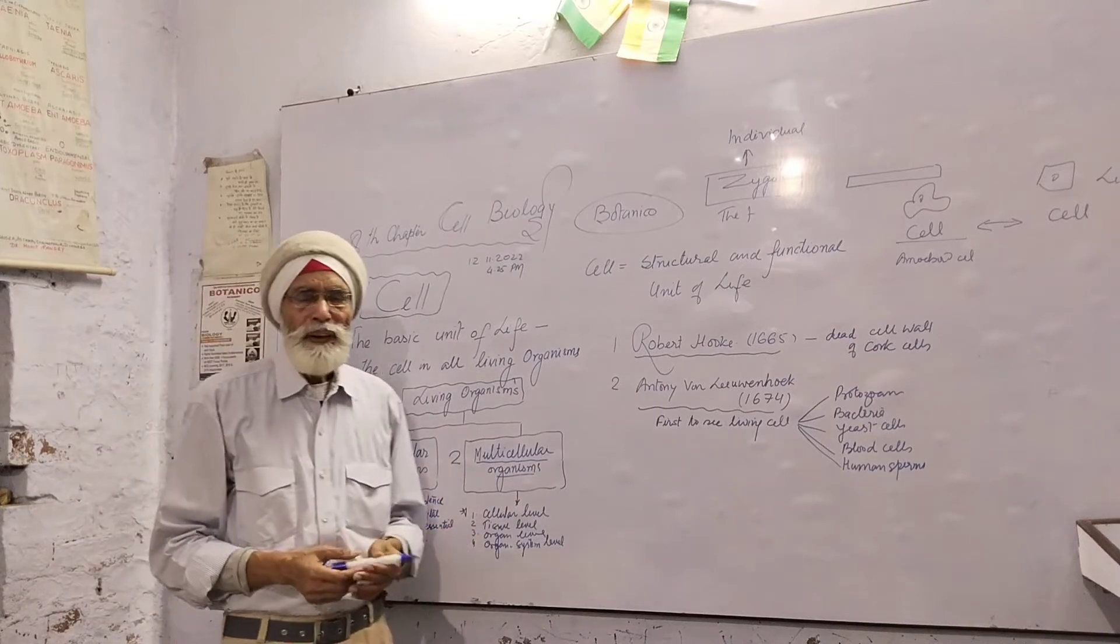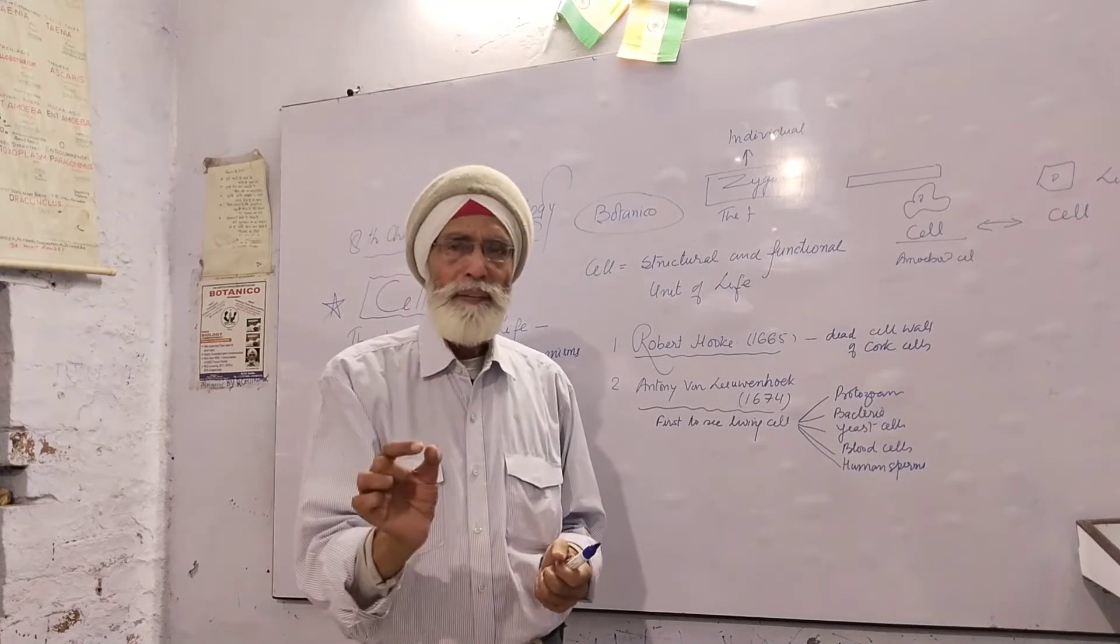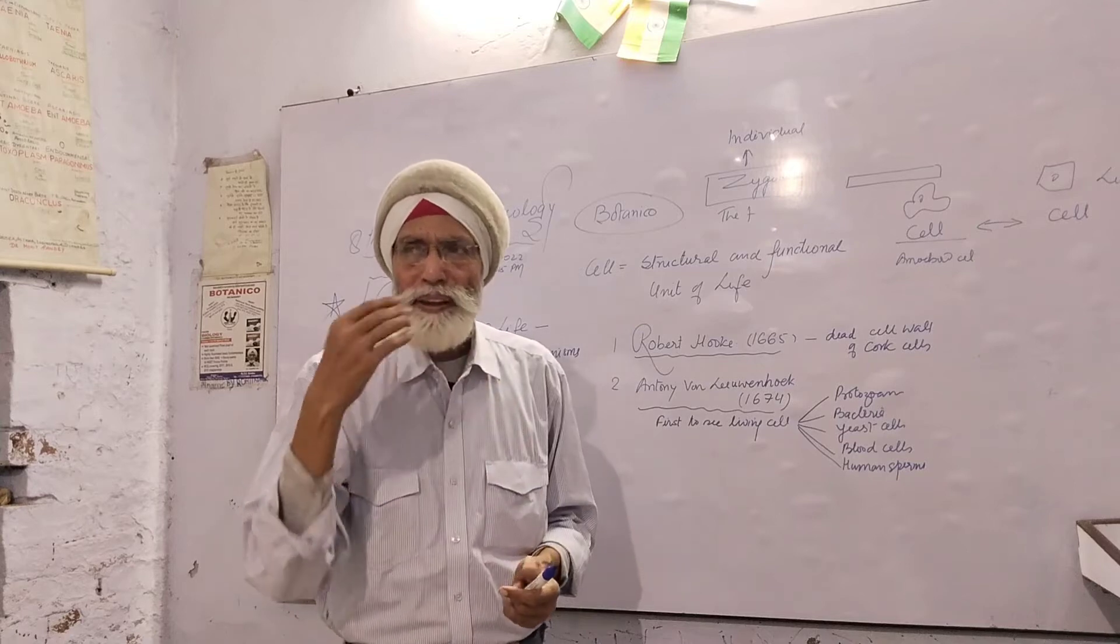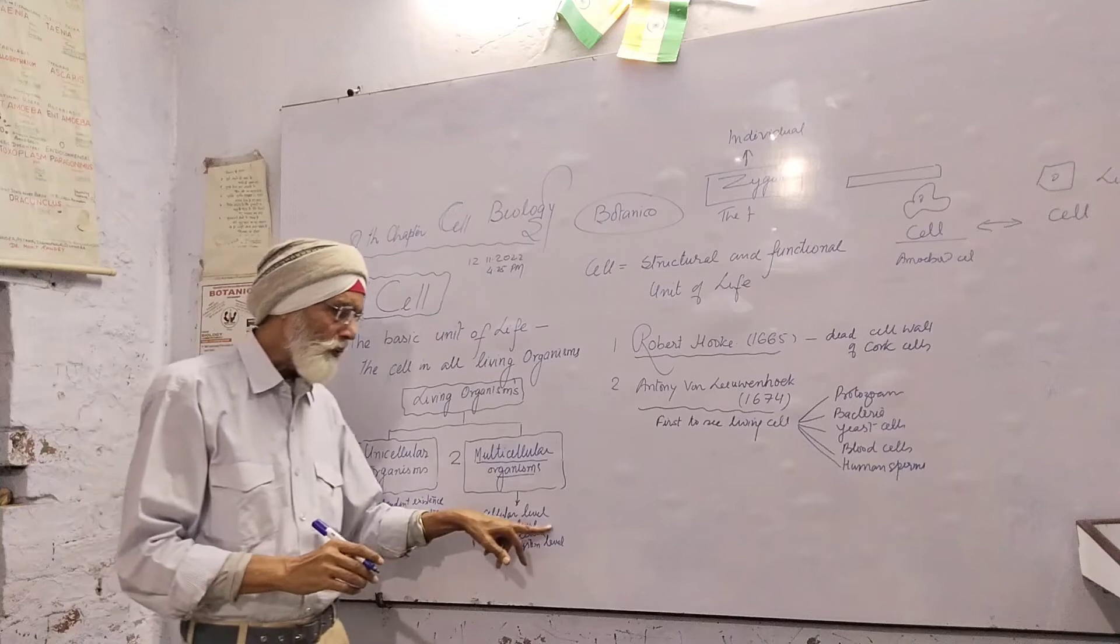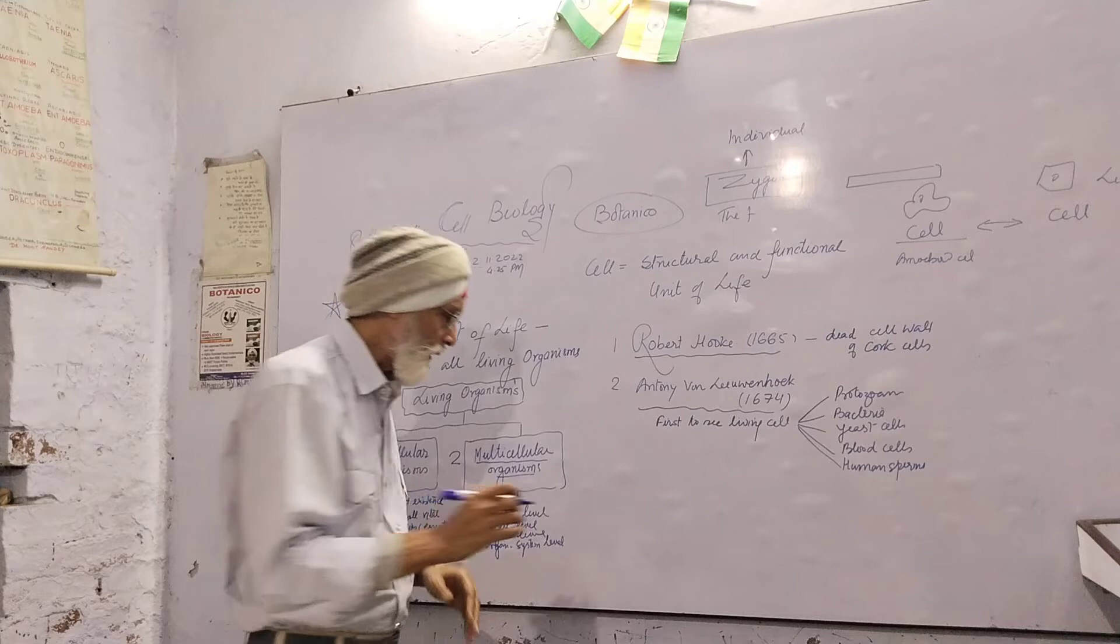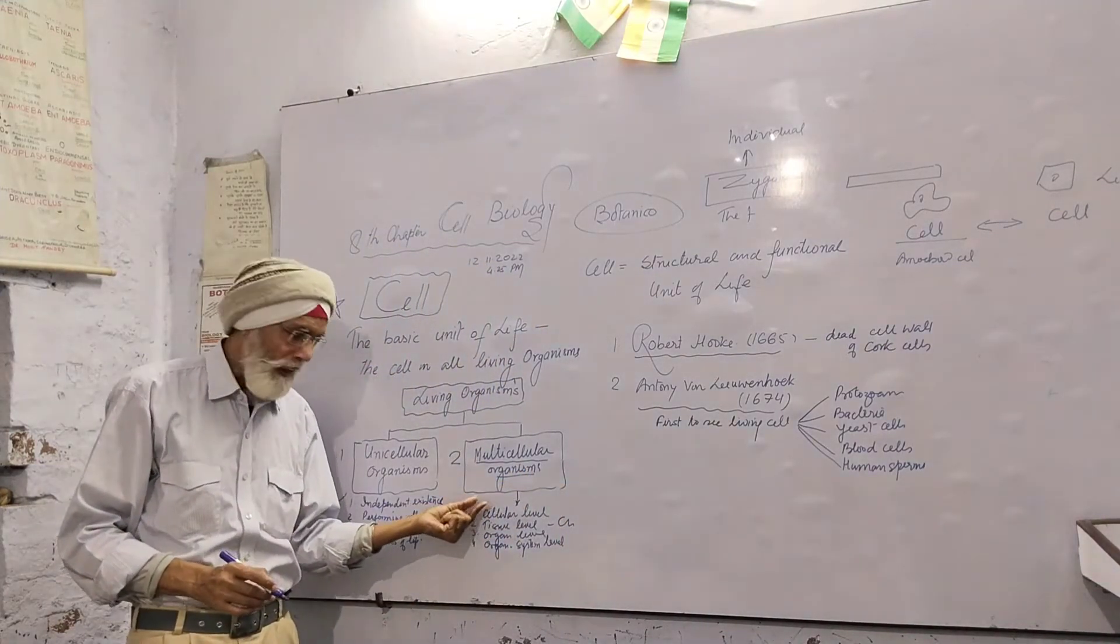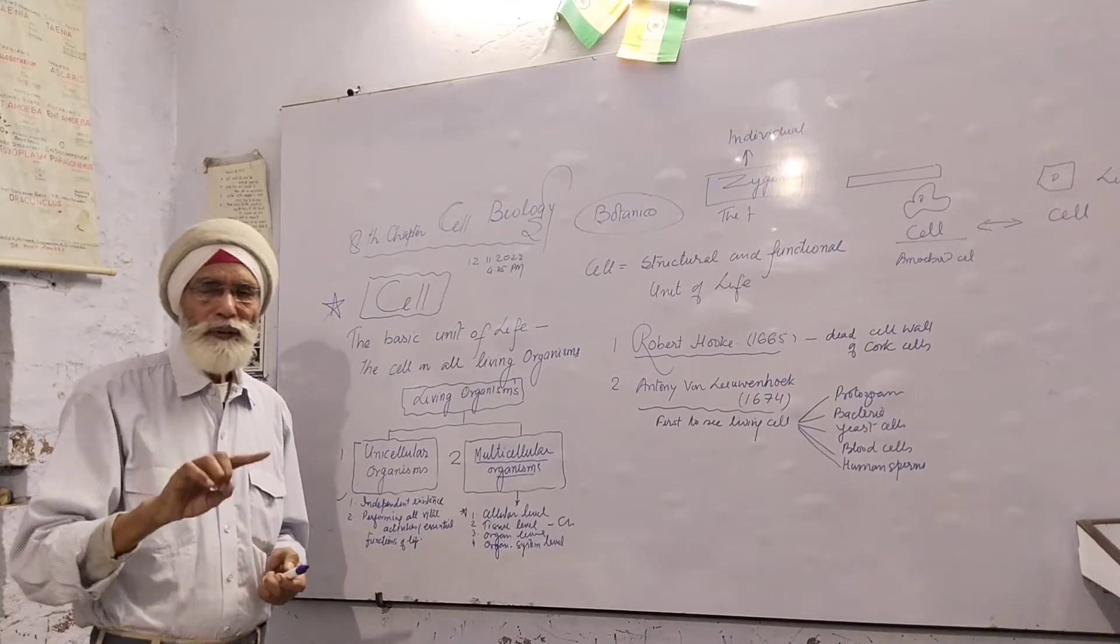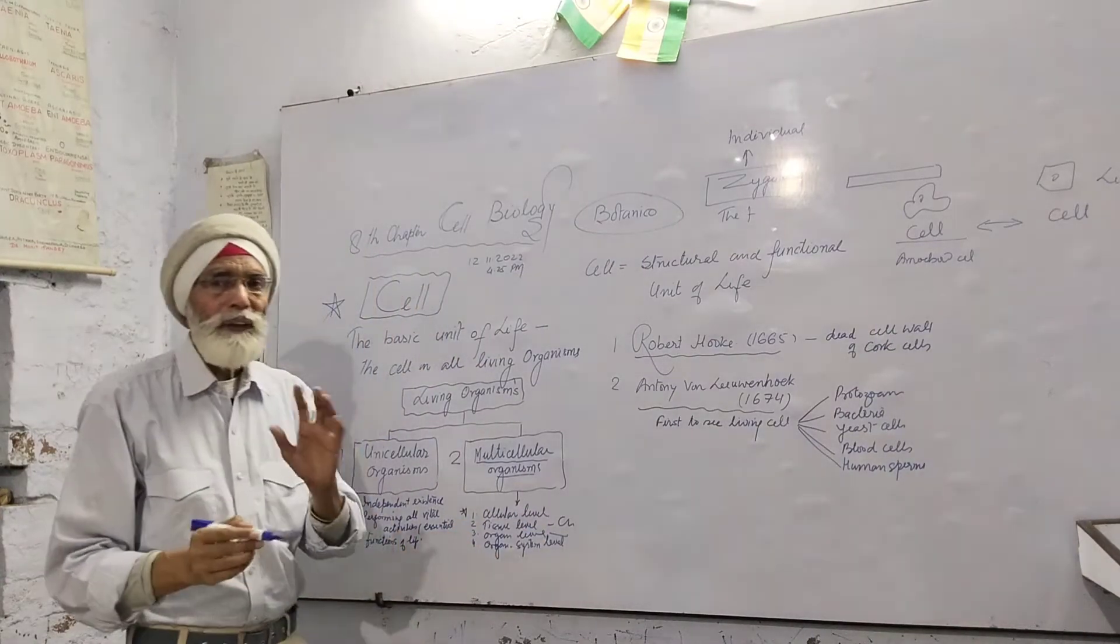The next is tissue level. This is another advancement of cell biology. We aggregate specific types of cells with the same structural and functional origin performing the same function. This constitutes a tissue. At tissue level, you see organization in Cnidaria. The first organism to have tissue level is Cnidaria. They perform activities at cellular and tissue level. Tissues are able to perform functions; ectoderm is there.